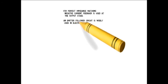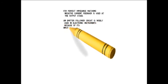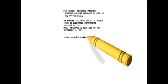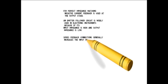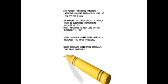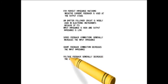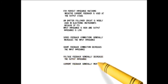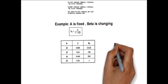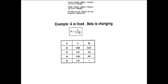The emitter follower circuit is mostly used in electronic instruments because it has high input impedance and low output impedance. Shunt feedback connection decreases the input impedance. Voltage feedback circuit generally decreases the output impedance. Current feedback circuit increases the output impedance. The series voltage feedback is used in negative feedback. In the table, AF equals A over (1 plus A beta); with A fixed and beta varying, AF is the calculated feedback gain.